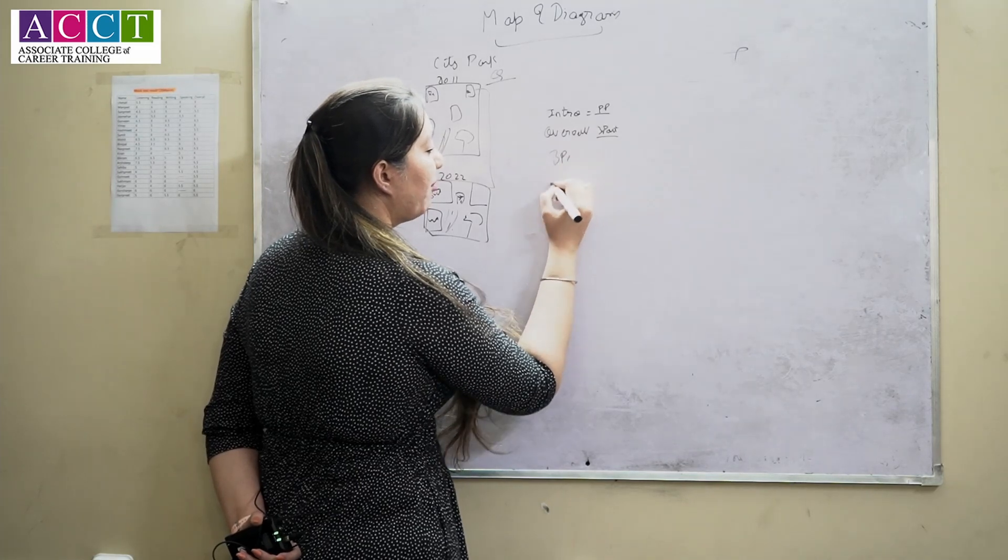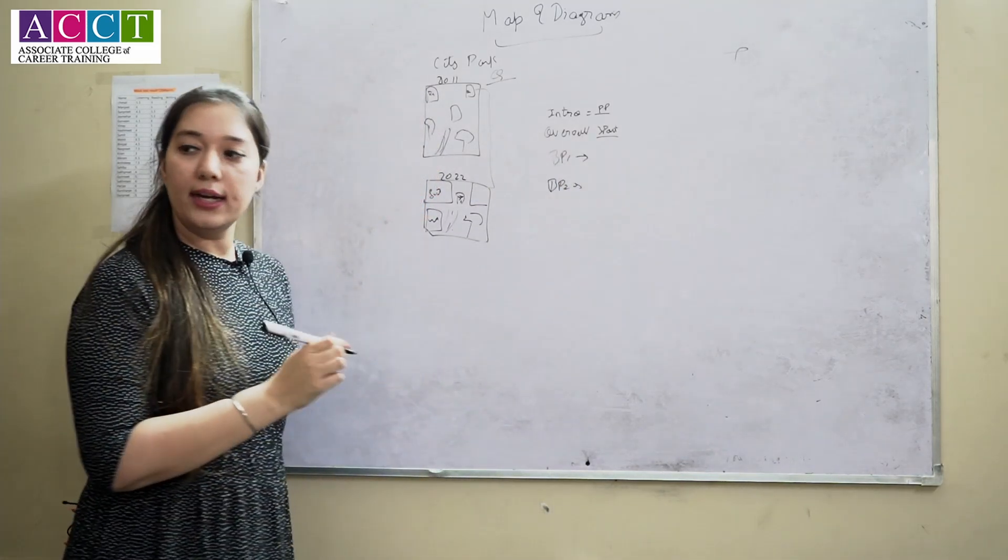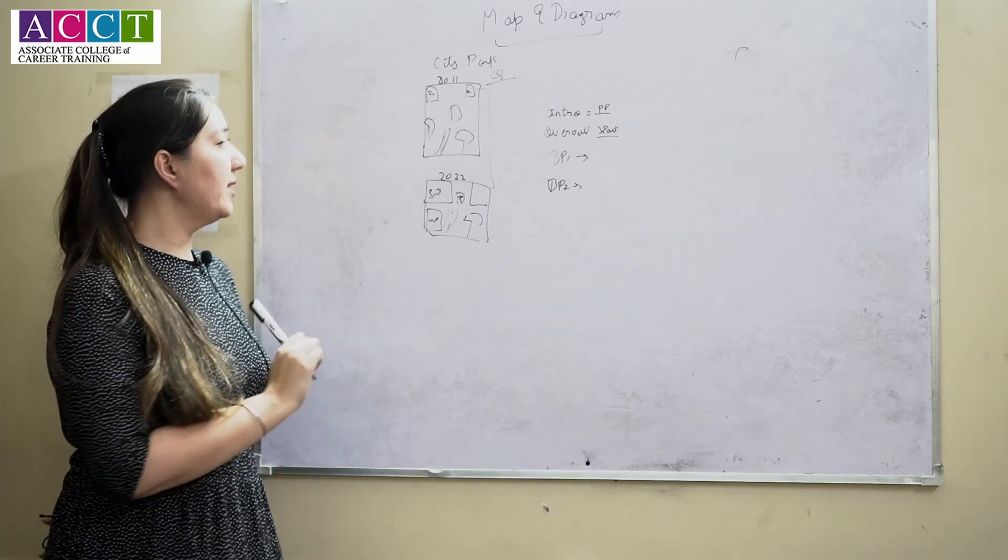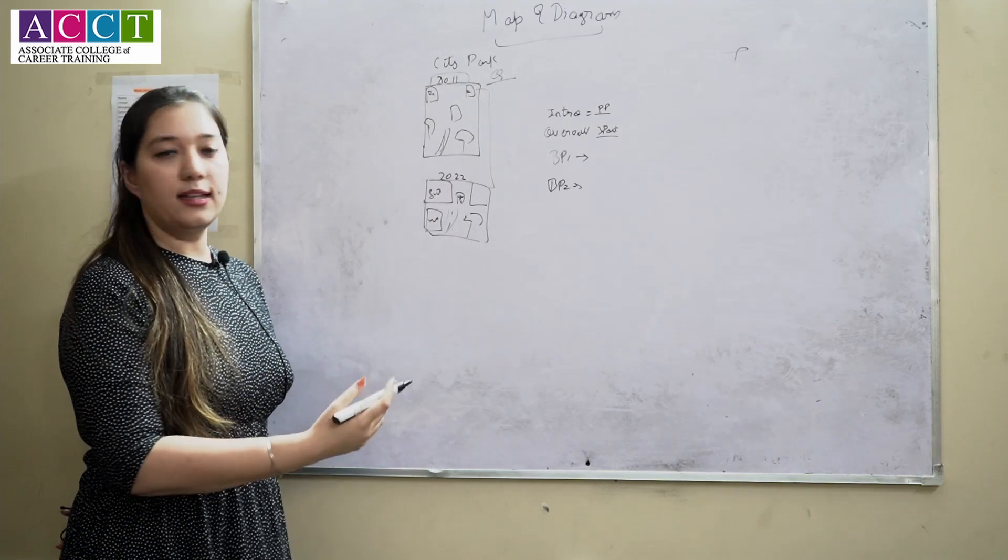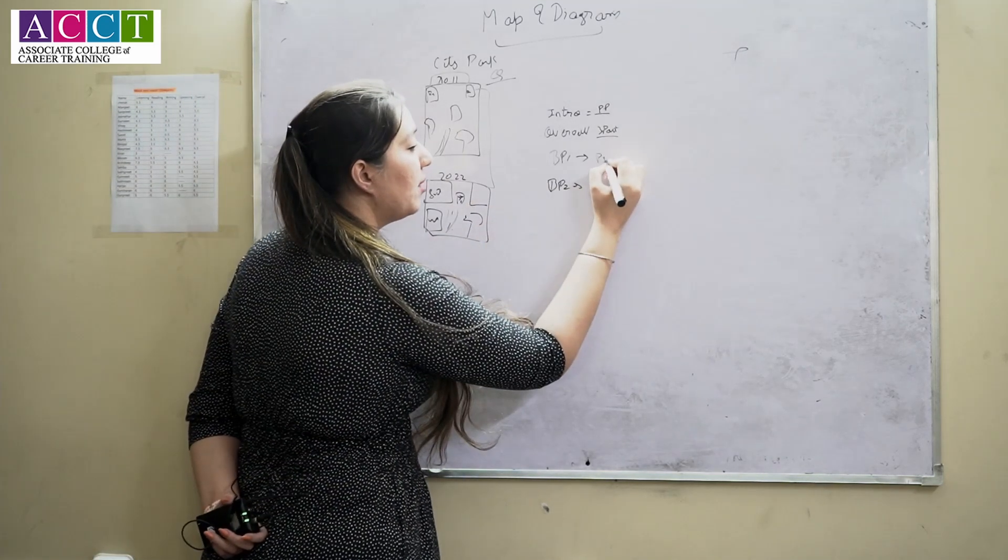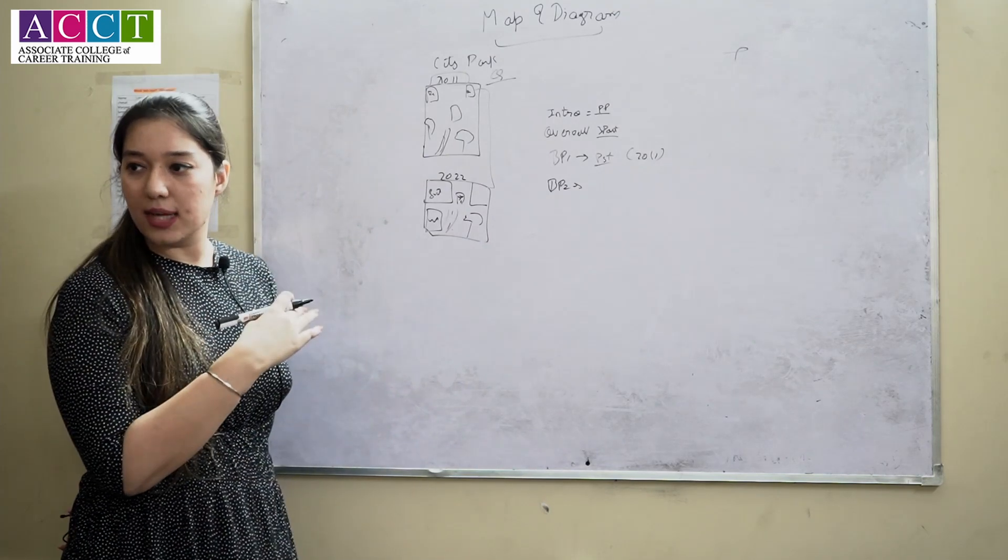After that I will write body paragraph one and body paragraph two. So now here I have to summarize. For example, now in 2011 what all sort of things are there, and this we have to write it in the past form because 2011, the year is given, that is in the past.